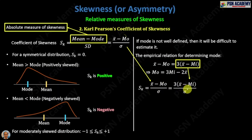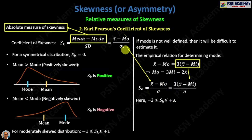With this modified formula your measure lies between minus three and plus three. I hope it's clear how to deal with measures of skewness using Karl Pearson's coefficient of skewness. In the next video we will discuss Bowley's coefficient of skewness.